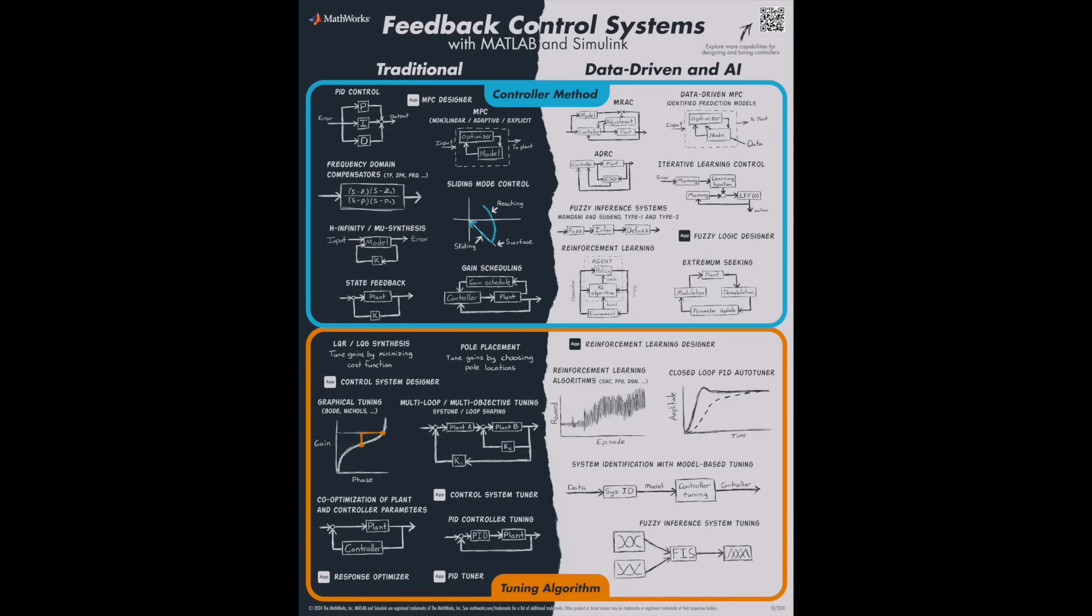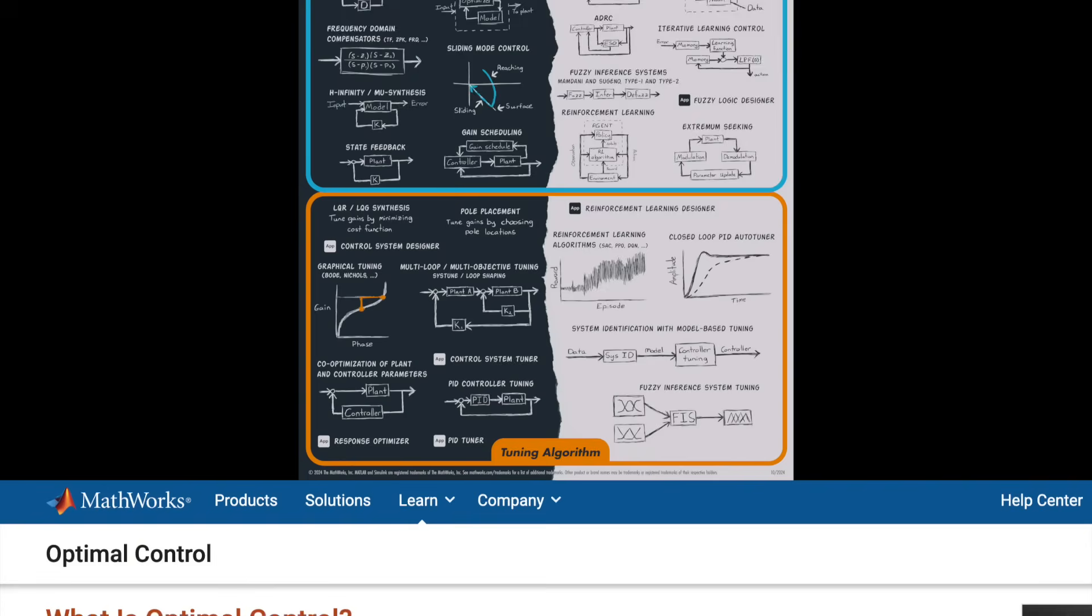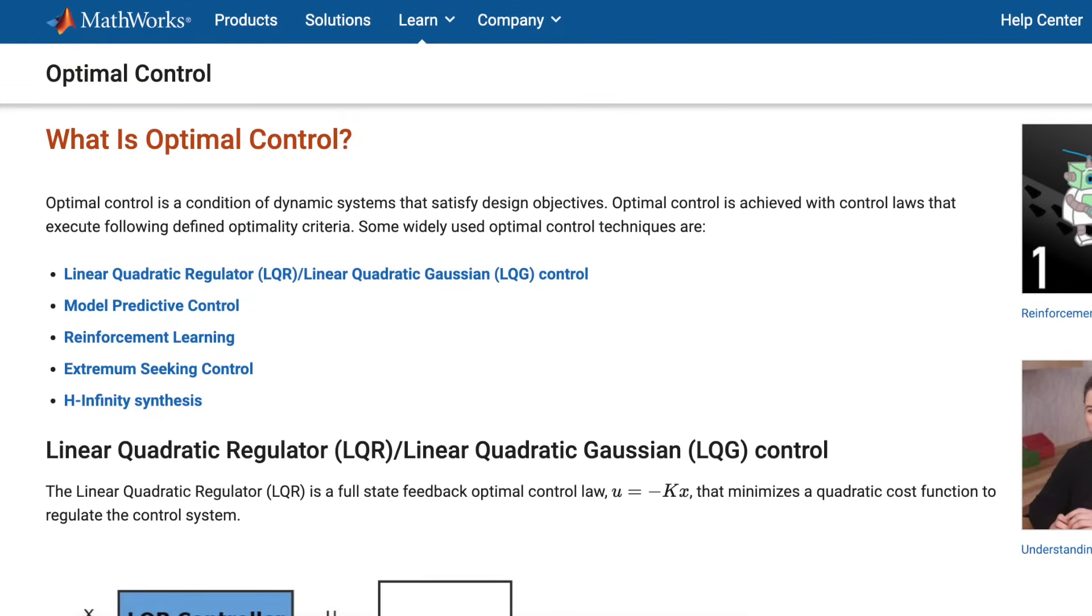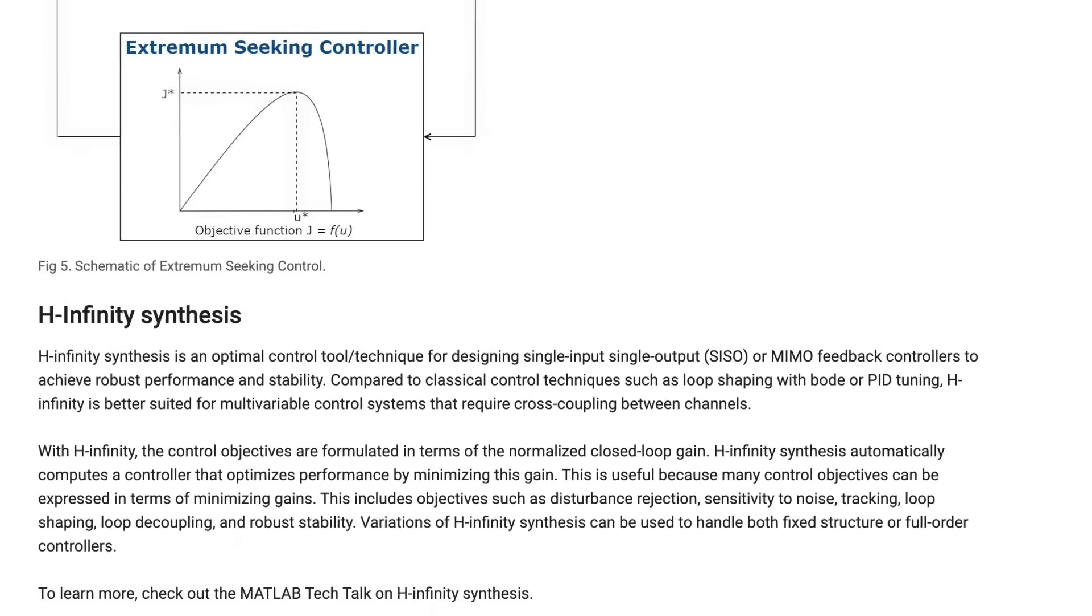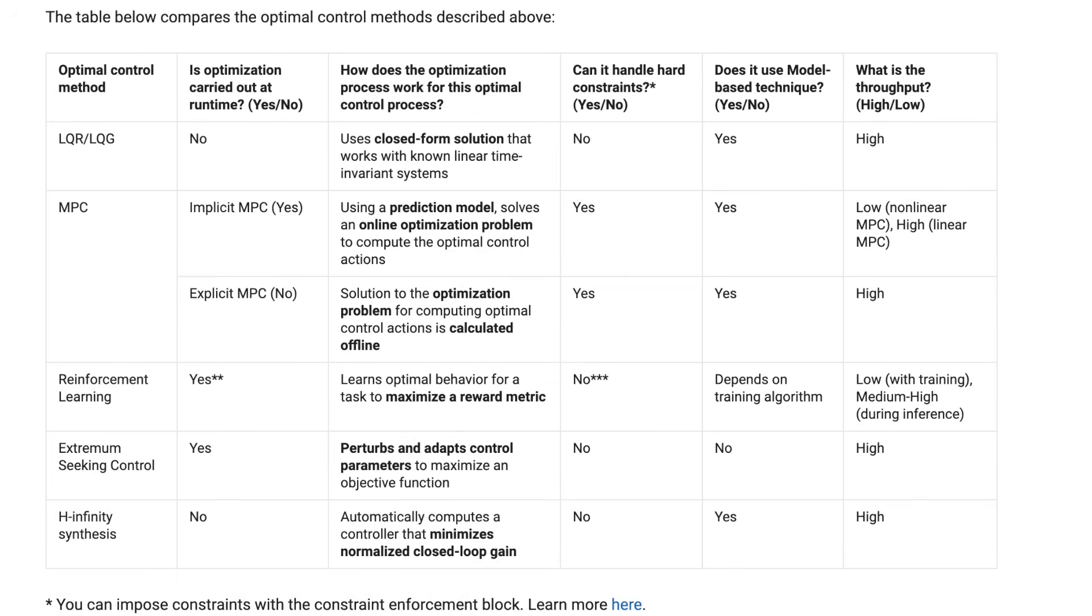Also, the last thing that I want to mention is that I know in this video I just listed a bunch of control methods without really comparing the pros and cons of each. And while we don't compare all of them, at the bottom of the what is optimal control page, we have a chart that lists out some of the features of several different optimal control methods. So at least you have some idea of what they're good for and when to use them. And I've also left a link to this page below if you want to check it out.